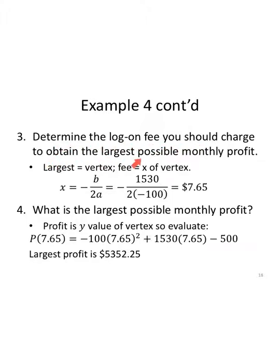So let's maximize profit. Step three, determine the logon fee you should charge to obtain the largest possible monthly profit. Well, as soon as I see the word largest, I know I'm looking for the vertex. Determine the fee you should charge. I know the fee is the X value. The X value of the vertex is what I'm looking for. So we know that the vertex is at X equals negative B over 2A. My B value from the previous slide was 1530. My A value was a negative 100. So I have negative 1530 divided by a negative 200. The two negatives make a positive 1530 divided by 200 is $7.65. So you should charge $7.65 in this particular situation in order to maximize your monthly profit.